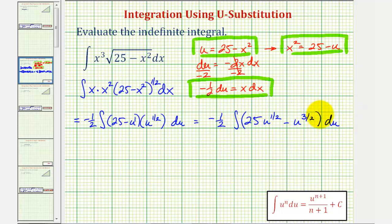And now, we'll find the antiderivative with respect to u. Then we write it in terms of x. So we'll have negative one-half times 25 times the antiderivative of u to the one-half would be u to the one-half plus one. That's u to the three-halves divided by three-halves.